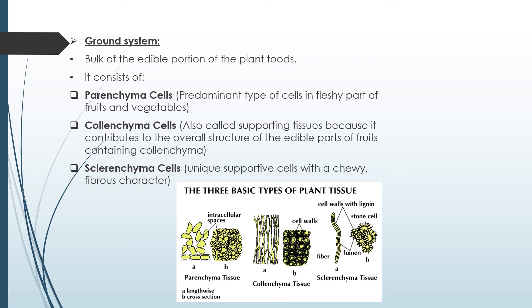The ground system forms the bulk of the edible part of plant foods. It consists of parenchyma cells, which are the predominant type of cells in the fleshy part of fruits and vegetables. Collenchyma cells are also called supporting tissues because they contribute to the overall structure of the edible parts. Sclerenchyma cells are unique supportive cells with a chewy, fibrous character. These three types of cells can be differentiated easily with the help of a diagram.